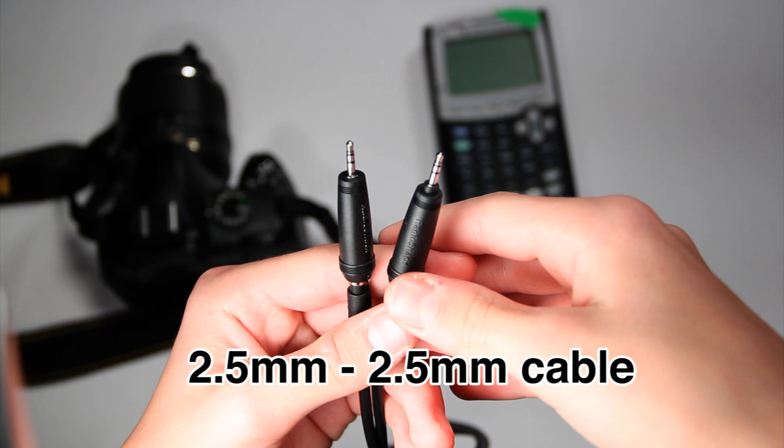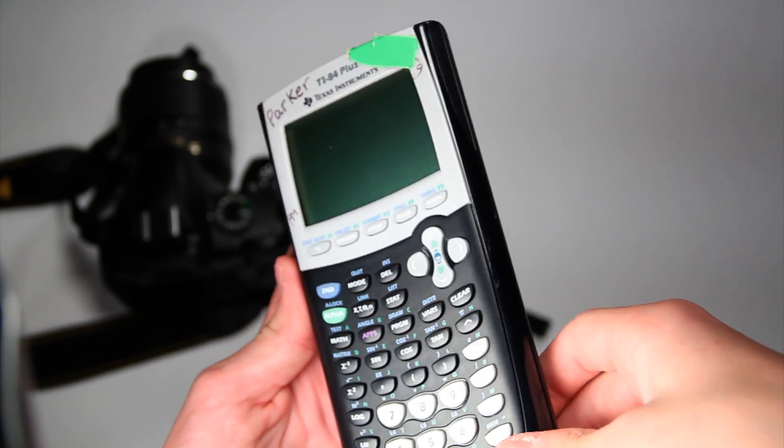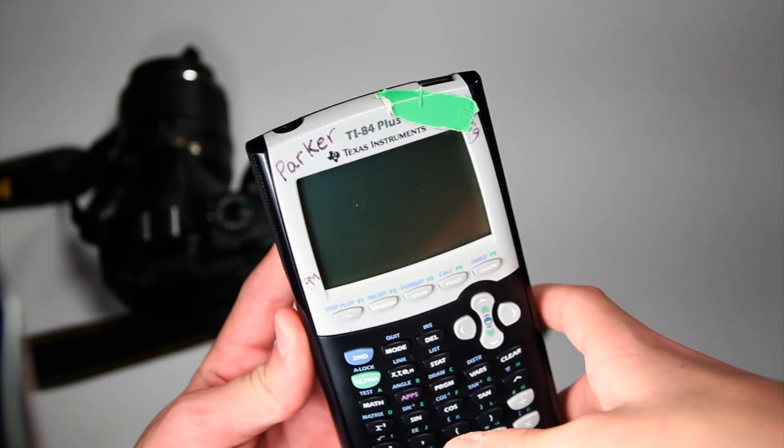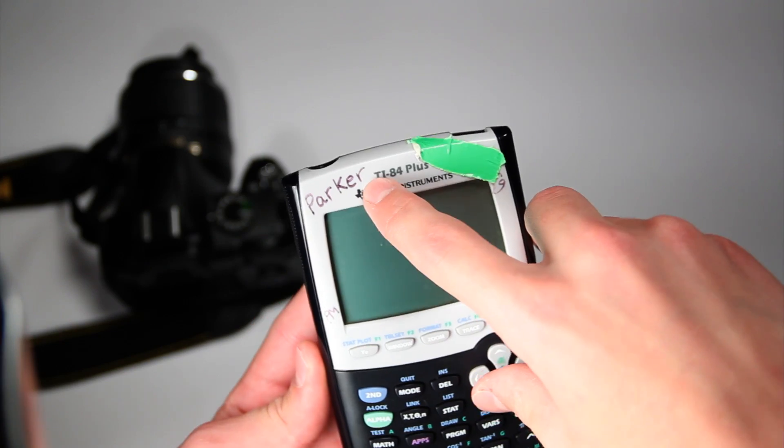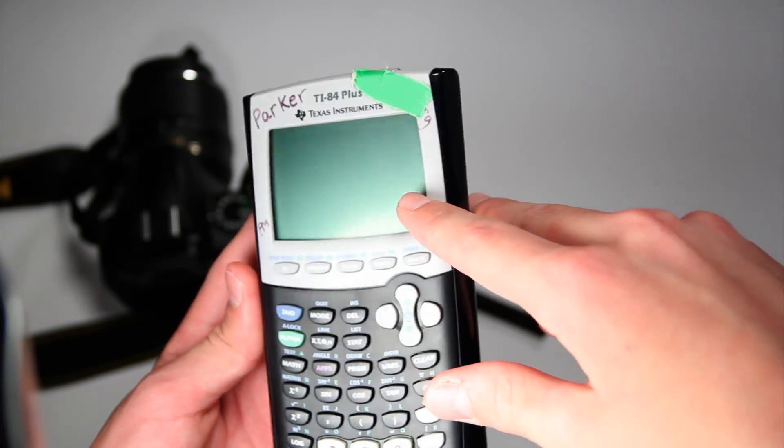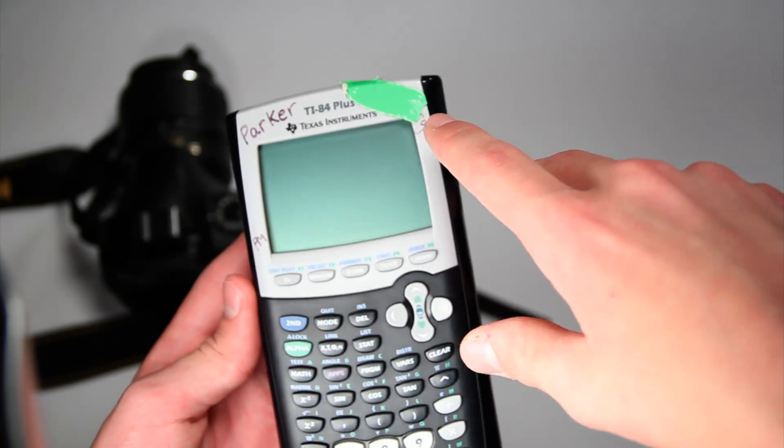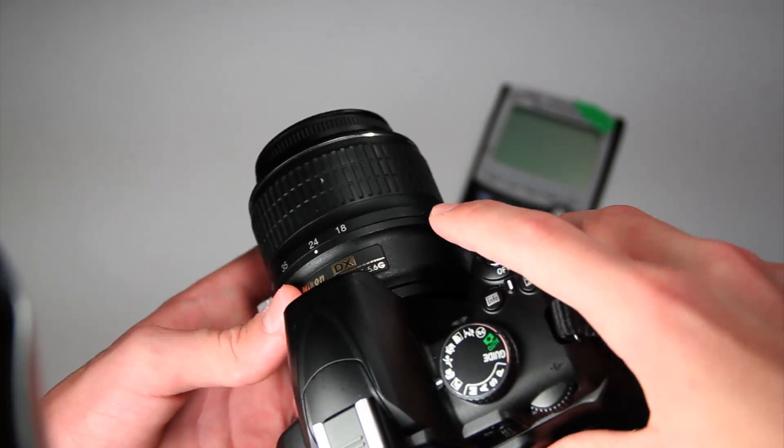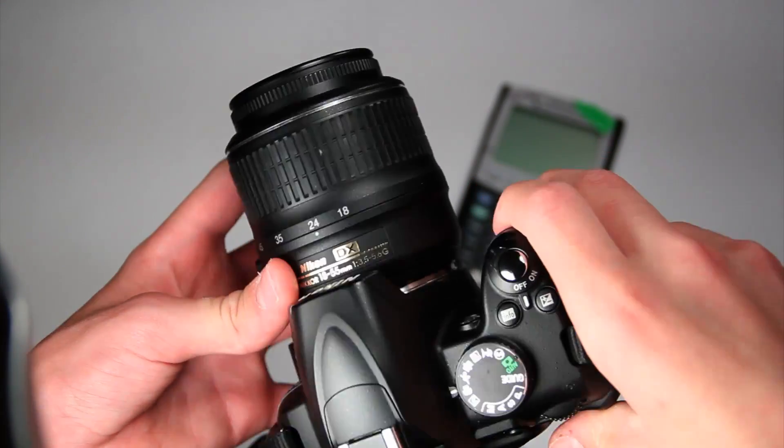First what you're going to need is a 2.5mm to 2.5mm cord. The next thing you're going to need is a Texas Instruments Calculator. I have the TI-84 Plus but this will work from anything from a TI-83 to a TI-89 and you're also going to need a DSLR.